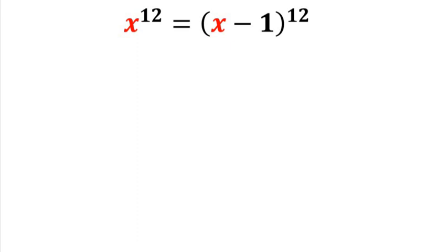In order to solve for this problem, what we want to do is cancel out the power of 12, and how we're going to do that is we're going to take the 12th root of both sides of this equation.